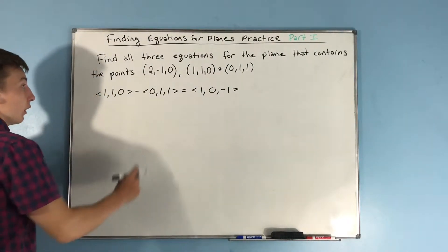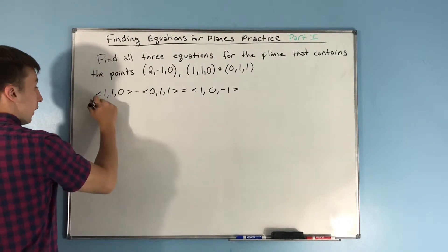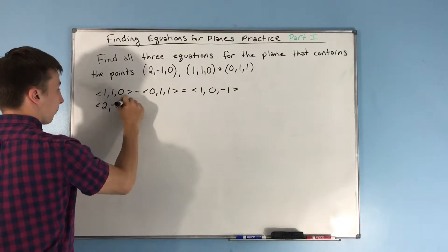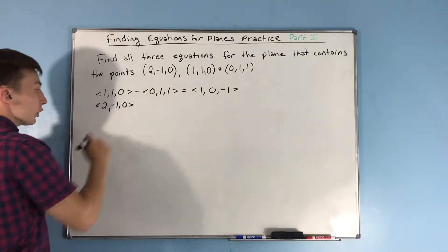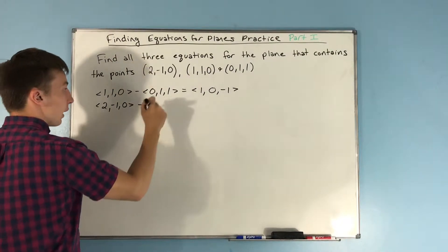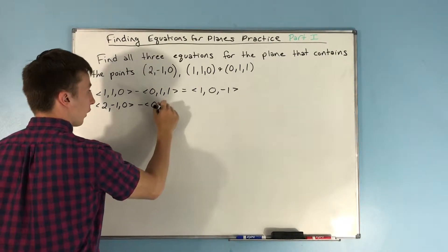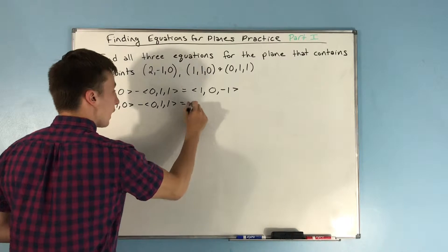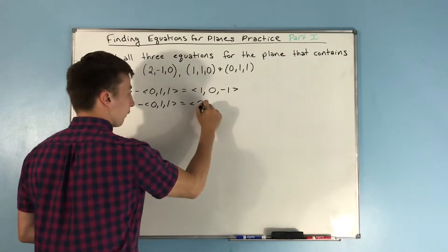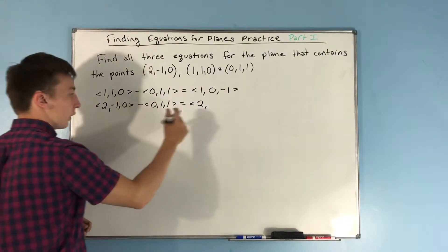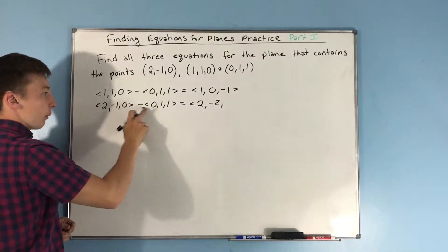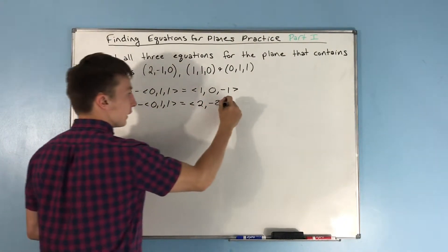Let's find another vector on the plane. We'll do (2,-1,0) minus (0,-1,1). That gives us 2-0=2, -1-1=-2, and 0-1=-1. So our second vector is (2, -2, -1).